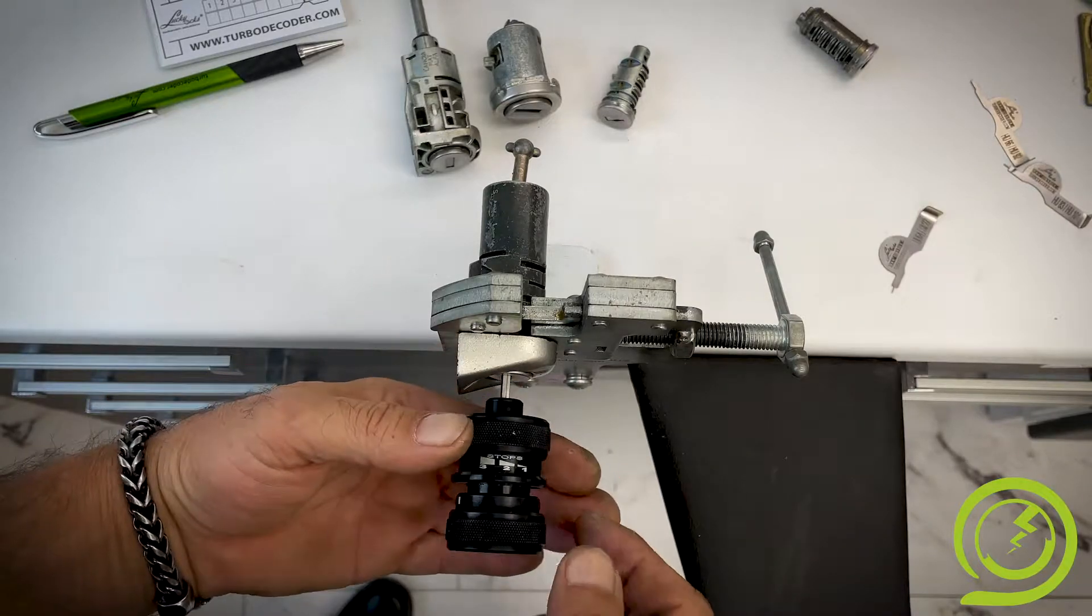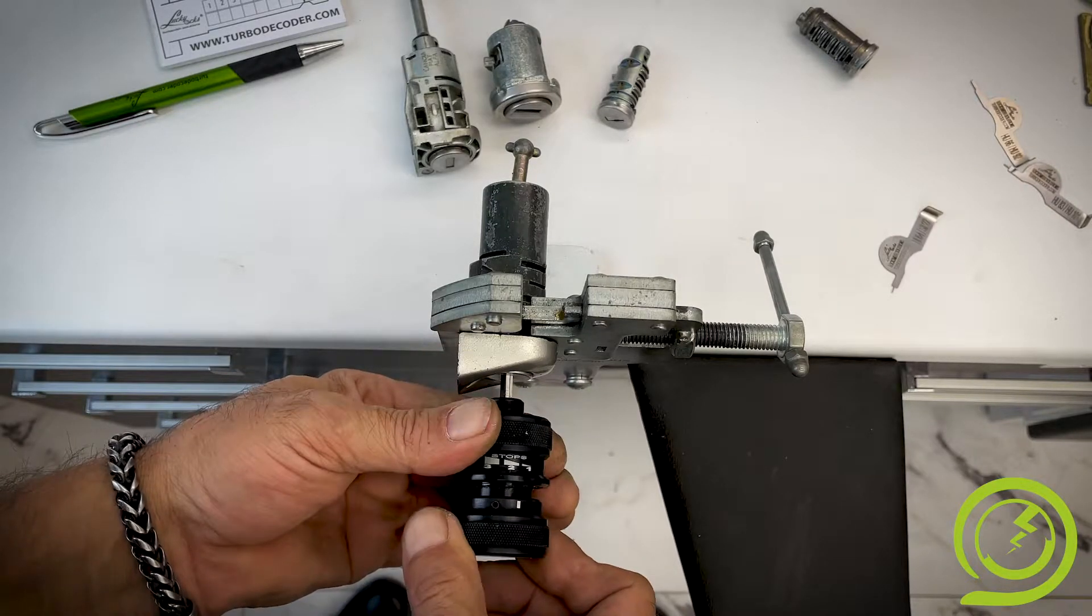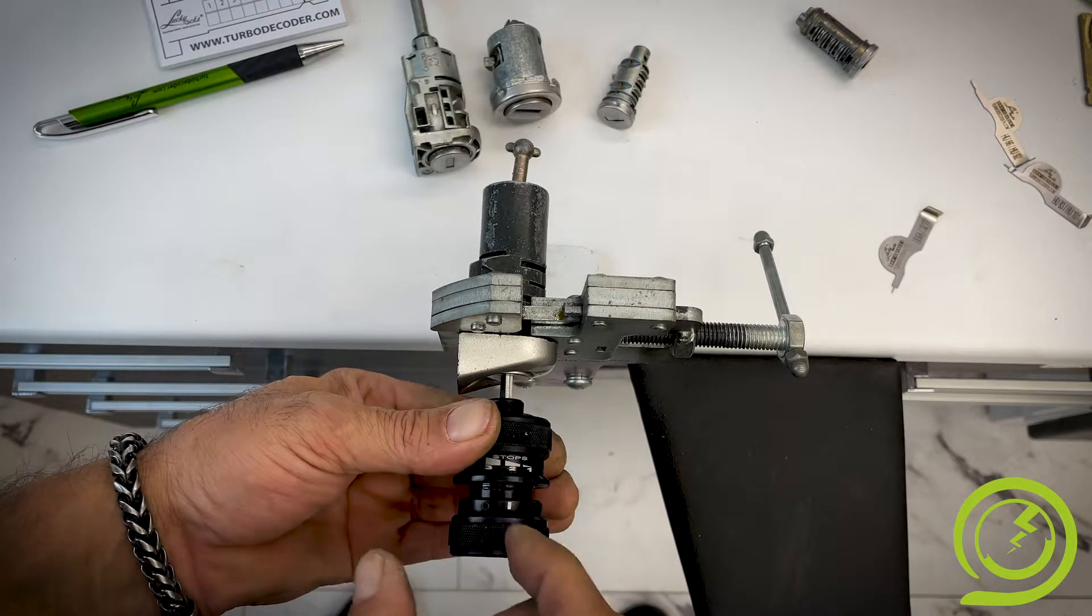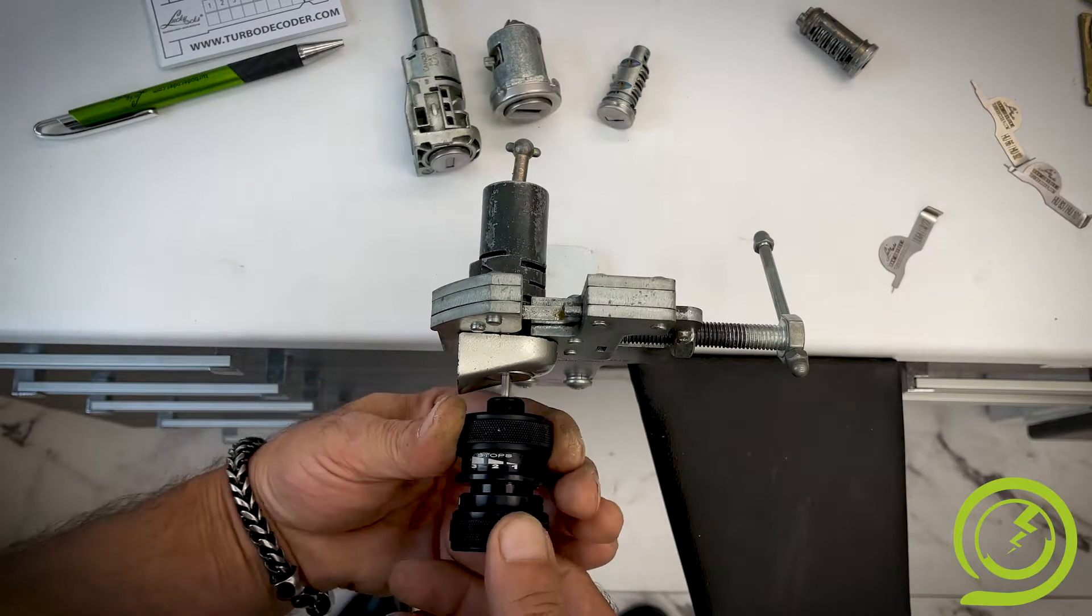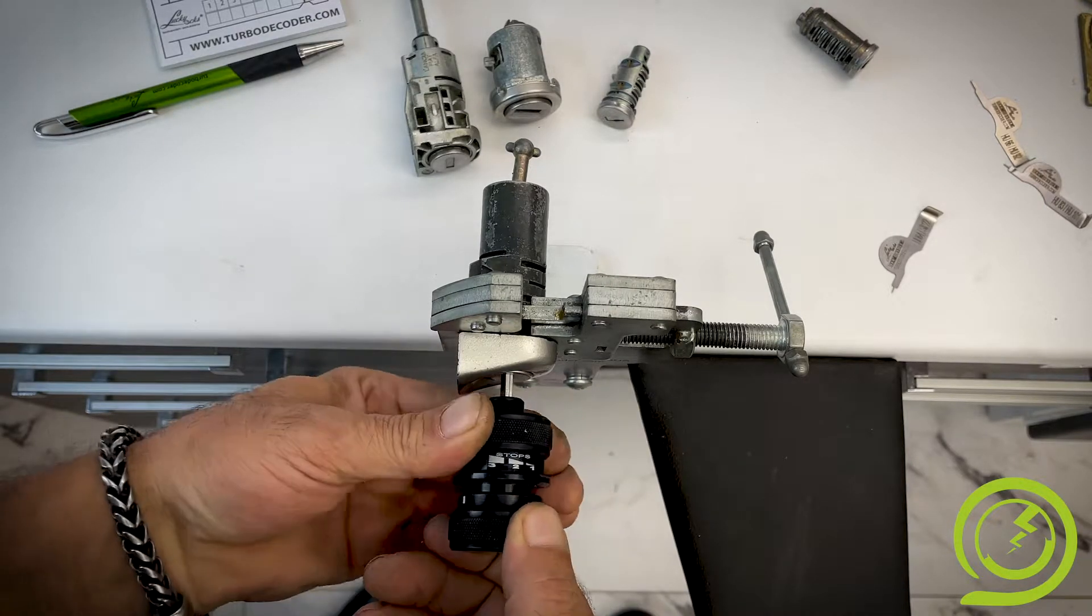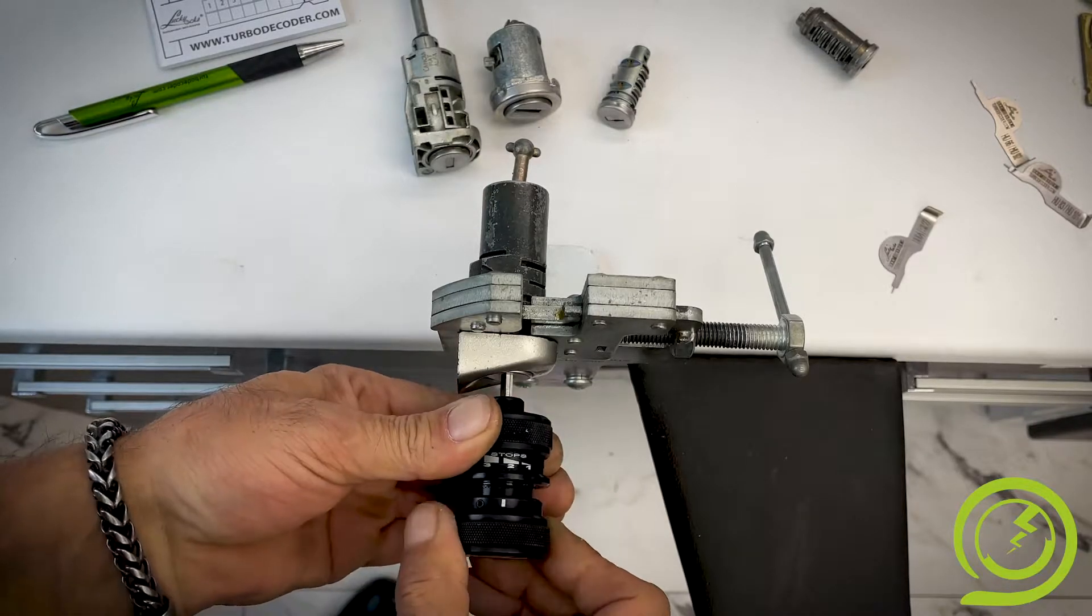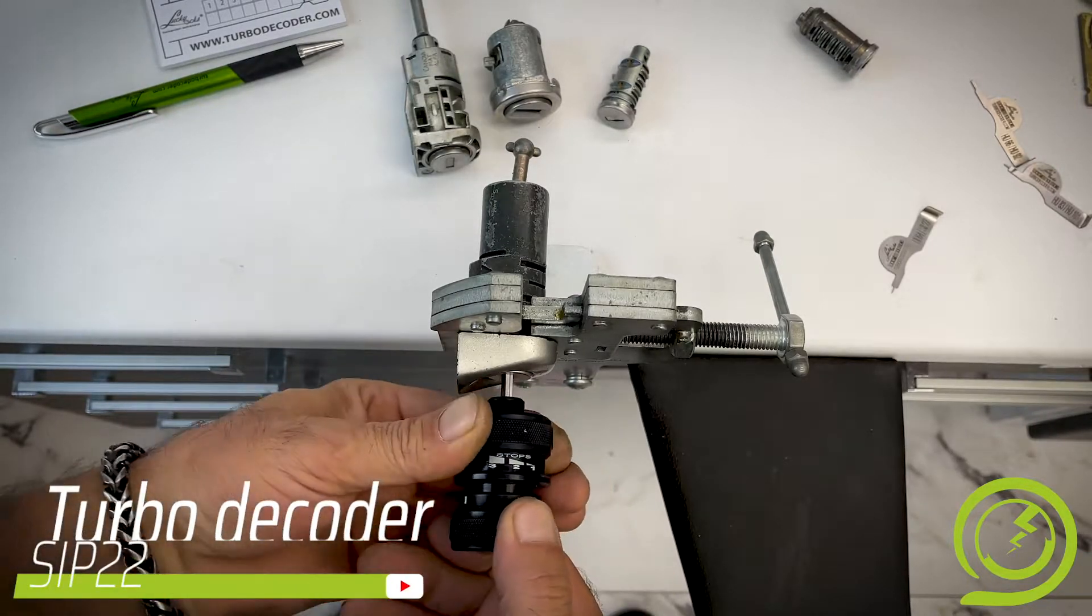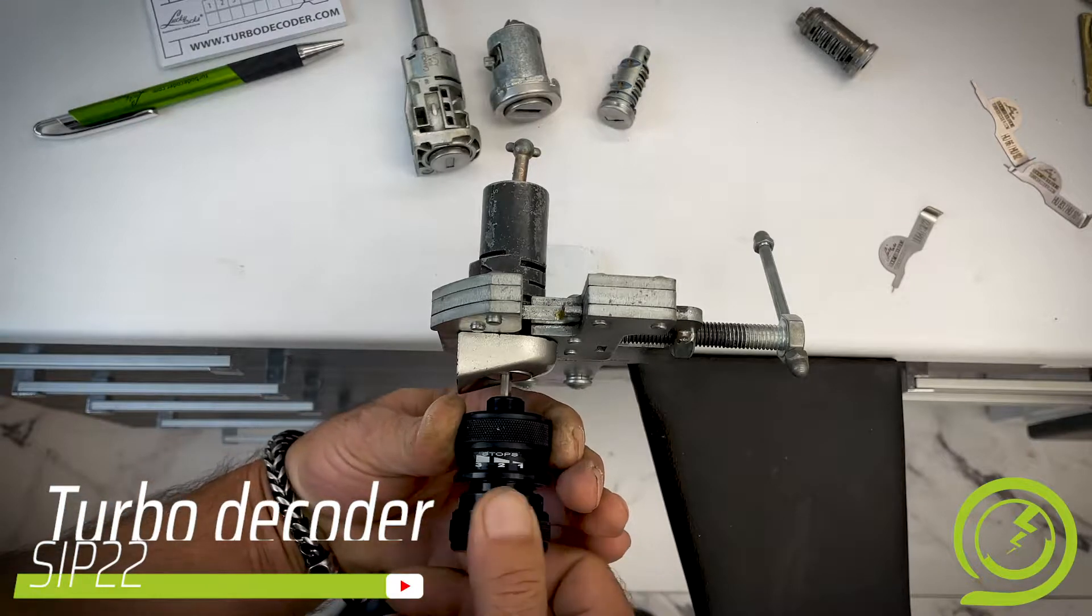If the lock is not open, you have to increase the rotation of the back wheel and go in the middle, in the second number. Again, right and left tension. Go on two, four, 10, 15 times, better 15.